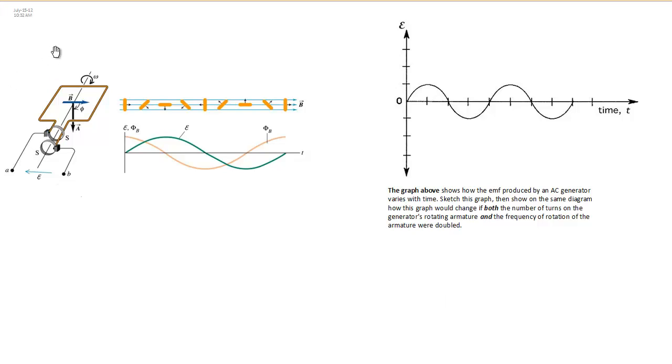Before we begin this question, let's look at what happens when a loop of wire, or a coil, rotates in a magnetic field. Imagine my magnetic field is from left to right as shown by this blue line, or by the series of blue lines on the right.